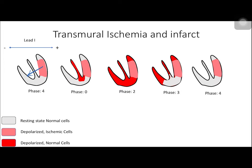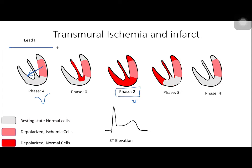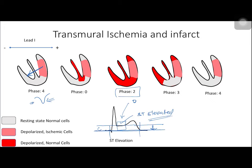Similarly, in transmural ischemia, the net vector is in the opposite direction, causing a negative wave during phase four and other phases. In phase two there is no injury current. This means phase four — most of the ECG — is depressed by this negative wave, but the ST segment receives little injury current component and appears elevated. Conventionally, ECG machines take the depressed baseline as isoelectric, so the ST segment appears elevated. This ST elevation is due to the absence of injury current in the ST segment during transmural ischemia.